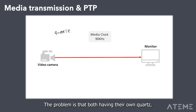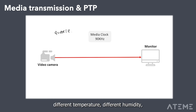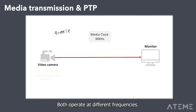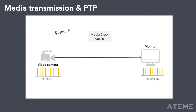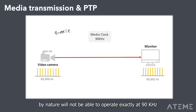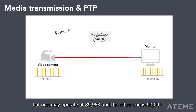The problem is that both clocks, having their own quartz and being in different environments — different temperature, humidity, and age — will operate at slightly different frequencies. By nature, a quartz cannot operate exactly at 90 kHz; one may operate at 89,988 Hz and the other at 90,002 Hz.